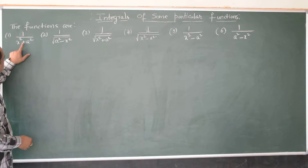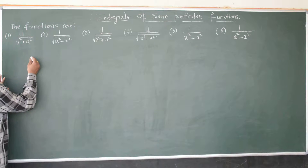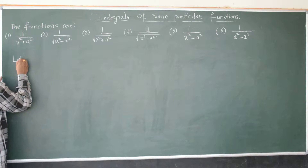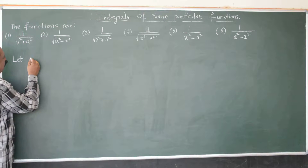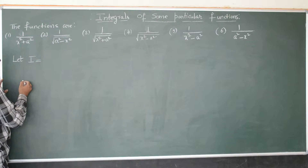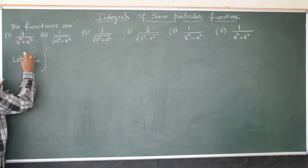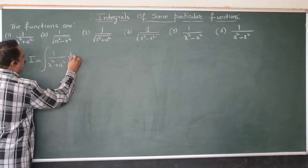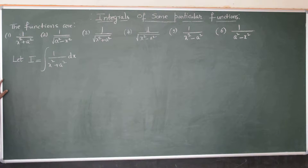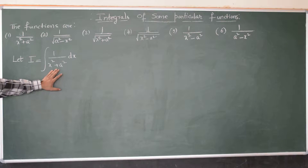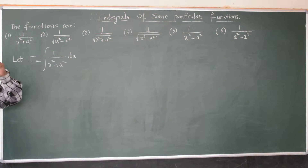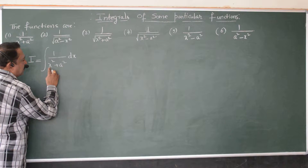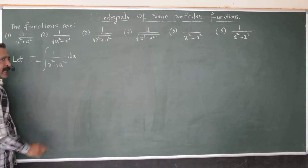Now let's consider the method of integration of the function 1 by x square plus a square. Before we start any problem on integration, we should call the given function as I. Let I be equal to the integral of 1 over x square plus a square dx. The function looks like this after you put the integral sign. Now when you observe this problem, the denominator is x square plus a square.